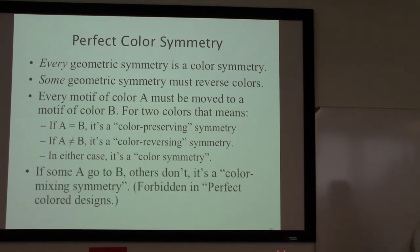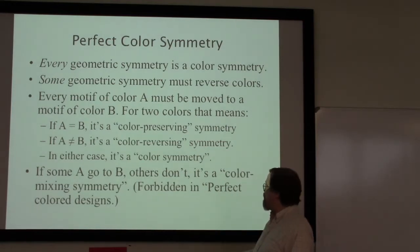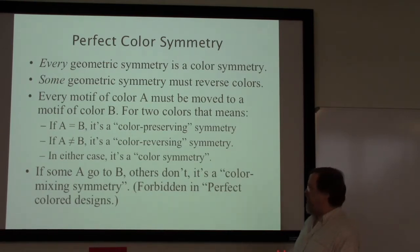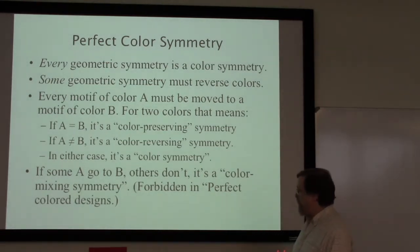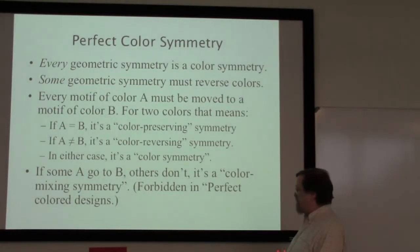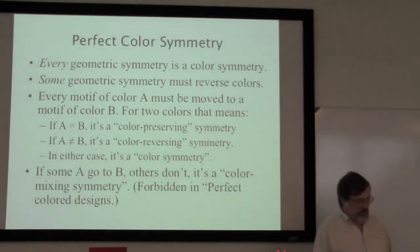The situation we're trying to avoid is where some of the color A's go to B's and others do not. In that case we can think of it as a color mixing symmetry — the A's are being mixed up, some going to B's and some staying as A's. While that can be good for certain artistic purposes, it's not allowed in what we're referring to as perfect colored designs.